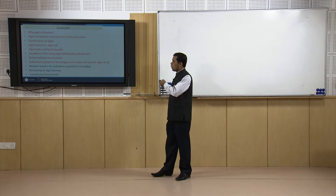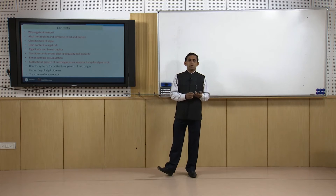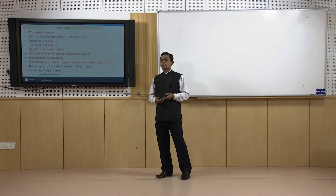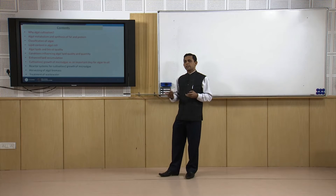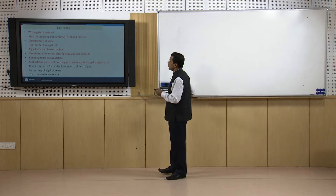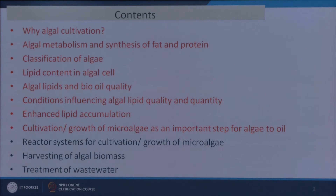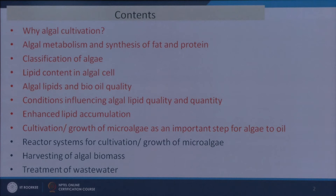If we want to use algal biomass through transesterification or any other process for production of bio-oil or fuels, the first step is to produce algal biomass and the second step is to convert it into energy. In this module we will discuss the growth of microalgae biomass and its separation from the water media — called harvesting. In another module we will concentrate on the production of bio-oil from algal biomass and its upgradation to biodiesel. The module contents are: why algal cultivation; algal metabolism and synthesis of fat and protein; classification of algae; lipid content in algal cells; algal lipids and bio-oil quality; conditions influencing algal lipid quality and quantity; enhanced lipid accumulation; cultivation and growth of microalgae; reactor systems; and harvesting of algal biomass and treatment of wastewater.